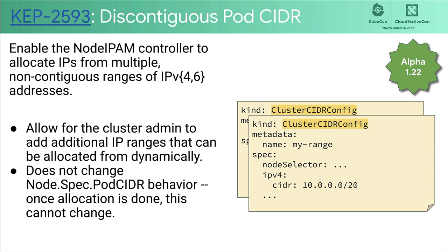Also in alpha is the ability for the node IPAM controller to allocate IPs from multiple non-contiguous CIDR ranges. This allows the cluster admin to dynamically manage IP ranges using the API, adding and removing valid ranges from the cluster. This is especially pertinent to people who use the built-in IPAM versus getting IPs from their CNI provider. Note that this does not change the behavior of node pod CIDR — once a node has been assigned a slice of IPs, it cannot change for the lifetime of the node.